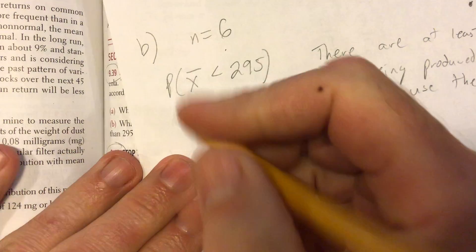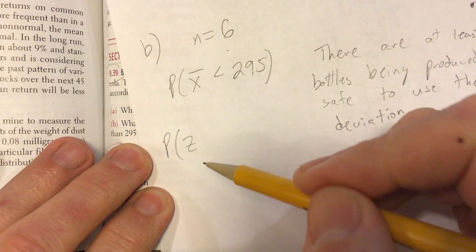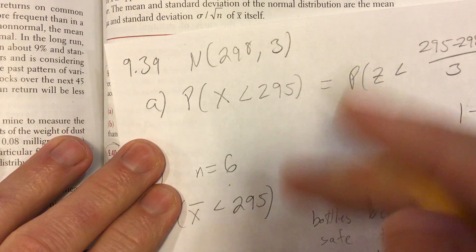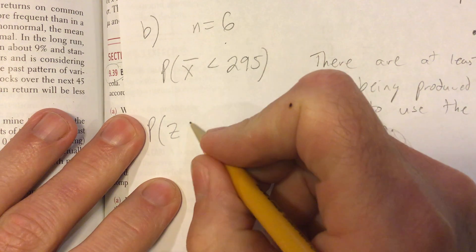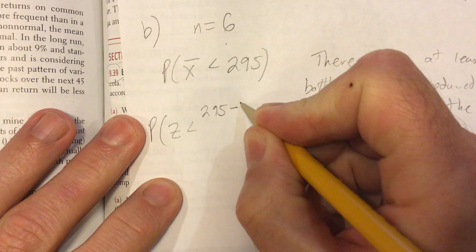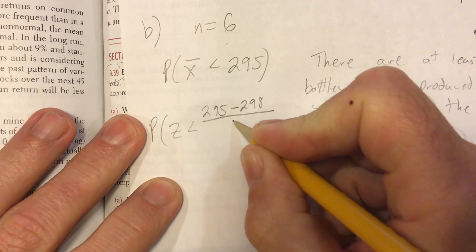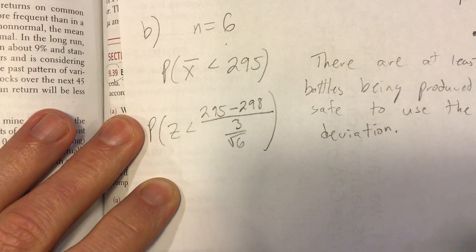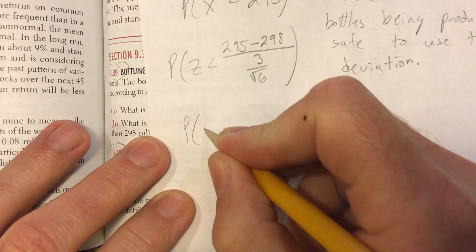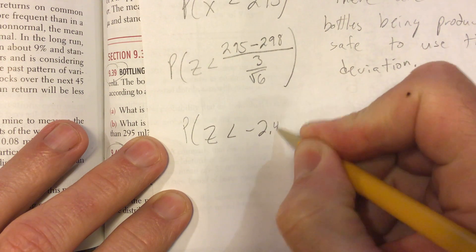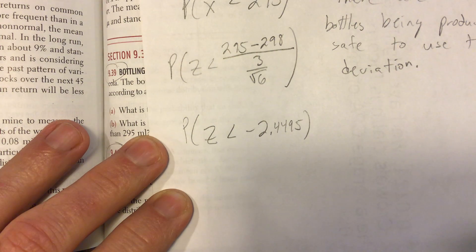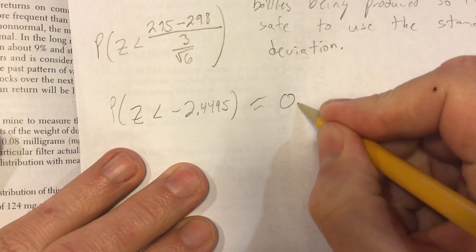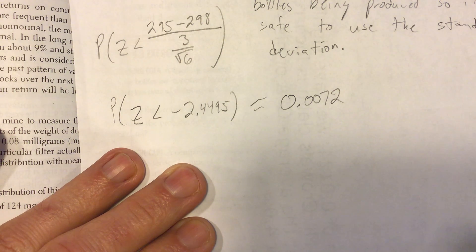Let's get our Z score. It's a Z score because the distribution was normal. So if I take any size sample from a normal distribution, I'm going to have another normal distribution. Z = (295-298)/(3/√6). And again, I'm trusting the answer key here, which seems reasonable.